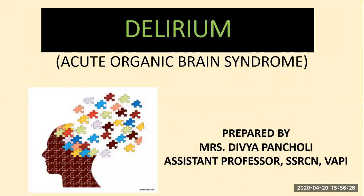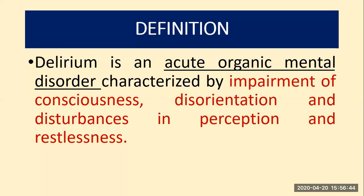As in the previous session, we discussed regarding dementia — chronic organic brain syndrome. So now in today's session, we will discuss regarding the other organic brain disorder, which is delirium, also known as acute organic brain syndrome. Delirium is an acute organic mental disorder characterized by impairment of consciousness, disorientation, and disturbance in perception as well as restlessness.